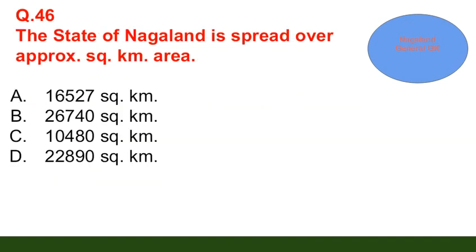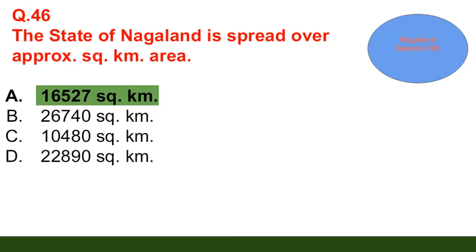Question number 46: The state of Nagaland is spread over how many square kilometers? Option A: 16,527 sq km; option B: 26,740 sq km; option C: 10,480 sq km; option D: 22,890 sq km. The correct answer is option A — 16,527 square kilometers.